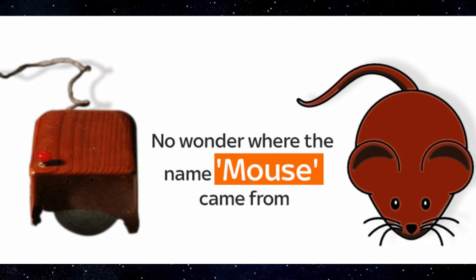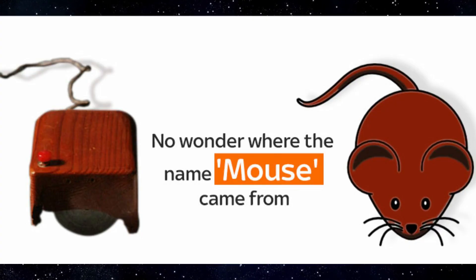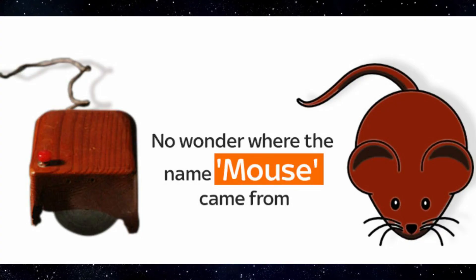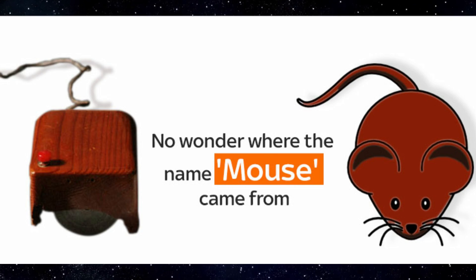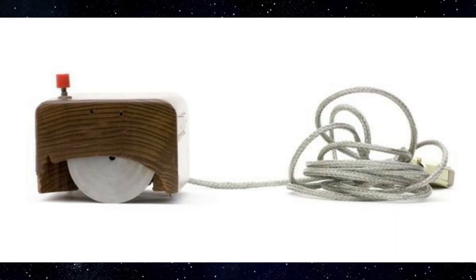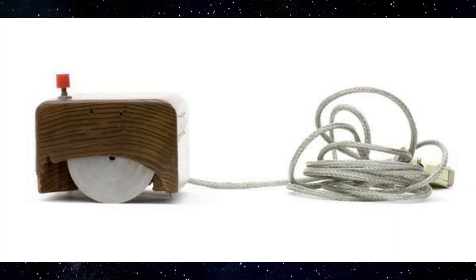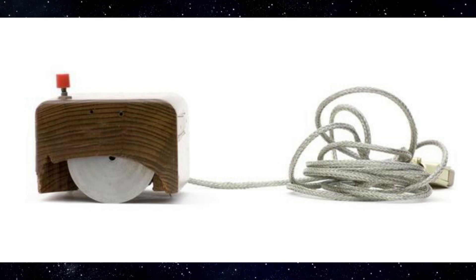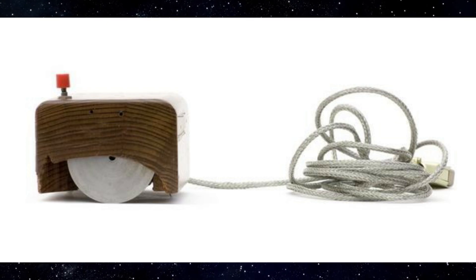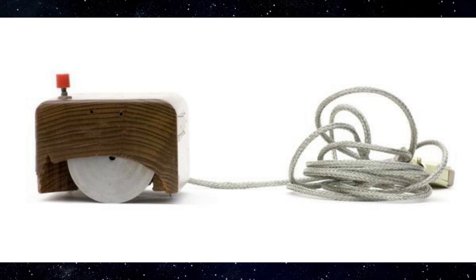The reason it was called a mouse is unclear, but it is likely due to its resemblance to a mouse — it has a similar shape and size, as well as a tail-like cord. Engelbart himself said, 'I don't know why we call it a mouse. A mouse is named because it looks like a mouse — that's about all there is to it.'